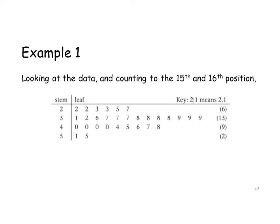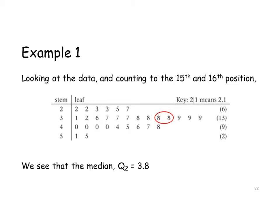So where is that on our data? In the stem and leaf diagram, we count along the pieces of data — first through to the fifteenth and the sixteenth. We need the number between these. They're both the same number. Using the key, we can see that these numbers are both 3.8. So our median, Q2, is 3.8.